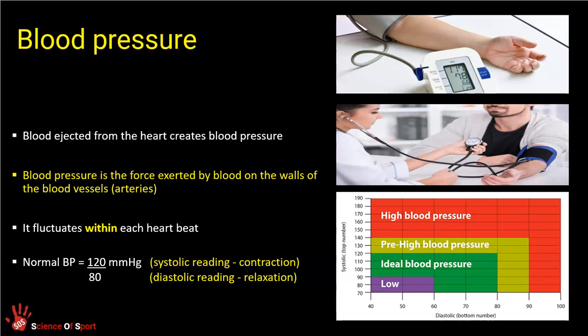Blood pressure is a measure of how much force the blood is exerting on the walls of the blood vessels. Blood that has just been whooshed out of the heart will be pushing against the aorta's walls quite a lot — that push measures as blood pressure. The more the blood is pushing on the walls of the vessel, the higher the blood pressure. Blood in the veins, which hasn't got that force from the heart, travels much slower and has a lower blood pressure reading. So blood pressure is the force that blood exerts on the walls of the blood vessels — specifically, we're talking about arteries.